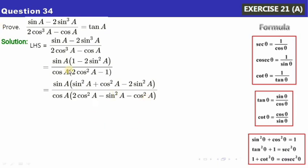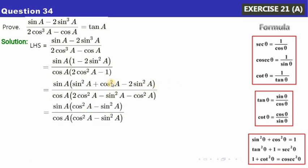In the numerator, sin²A minus 2sin²A gives minus sin²A, so the numerator becomes cos²A minus sin²A. In the denominator, 2cos²A minus cos²A gives cos²A, so the denominator is cos²A minus sin²A. These are the same, so they cancel, leaving sinA/cosA, which equals tanA — exactly what we wanted to show. You may pause and note the solution.